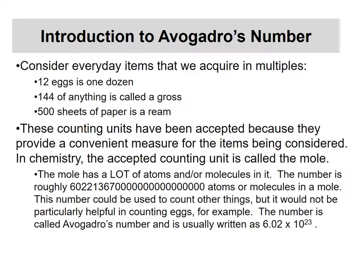So let's get an idea of what we're talking about when we're talking about Avogadro's number. In your daily life, if you go to the donut shop in the morning, you order donuts by the dozen — two dozen, three dozen, however many you want. We all understand that 12 eggs is one dozen eggs. That's just our definition. So if you have 24 eggs, you've got two dozen.